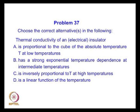Next, we are talking about thermal conductivity of an electrical insulating material, insulator or dielectric material. The correct alternative is: it is proportional to the cube of the absolute temperature T at low temperature, which is obviously correct; it has a strong exponential temperature dependence at intermediate temperature due to Umklapp processes, which is also correct; and it is inversely proportional to T at high temperature, which is also correct, but it is not a linear function of temperature. So the correct alternatives are A, B, and C.